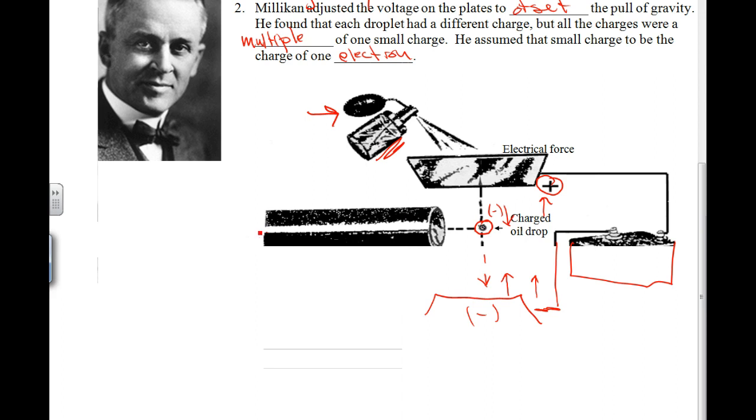Right here, he was looking through this little magnifier or telescope thing. This is his eyeball. He looked through and observed the size of these and was able to estimate their mass because of their size, because he knew the density of oil. So he estimated their mass, and he was able to tell the amount of charge that he had to apply to offset their mass.